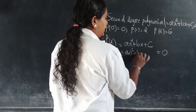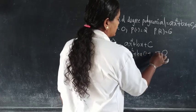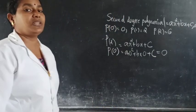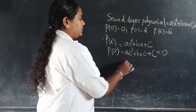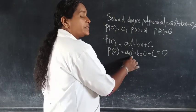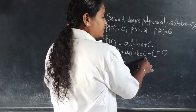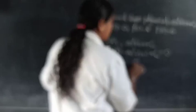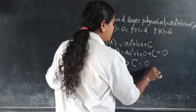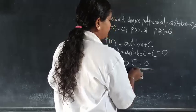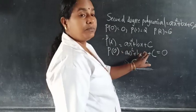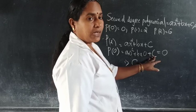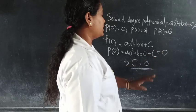Now, applying the first condition p(0) = 0. Substituting x = 0: a(0) + b(0) + c = 0, so c = 0. Therefore c is zero.